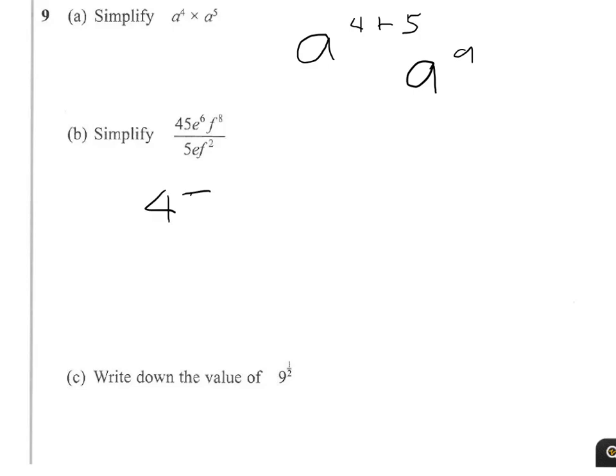So I'll write that out. 45 over 5, e6 over e, and f8 over f2.